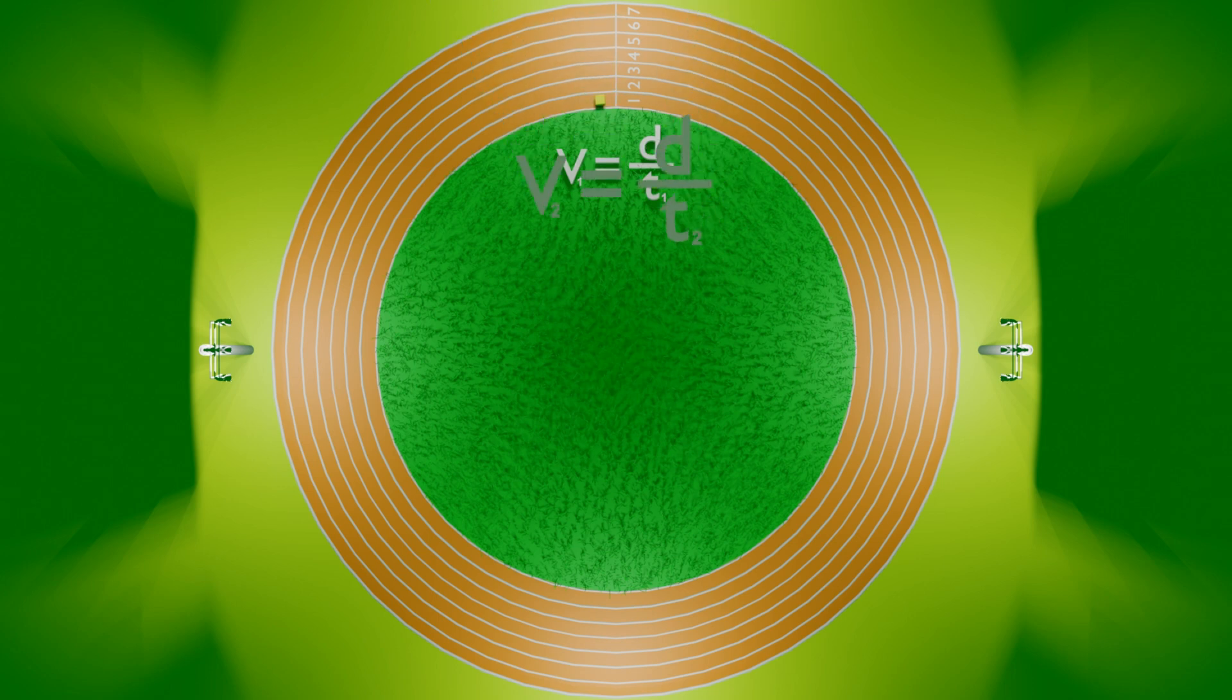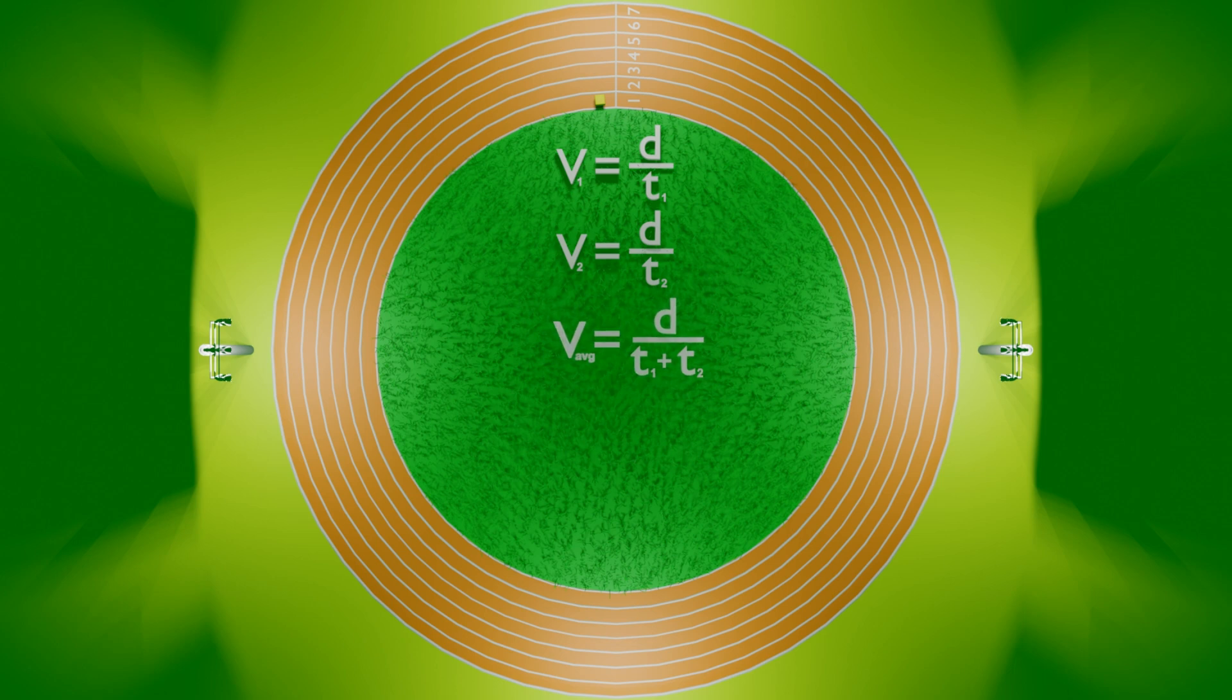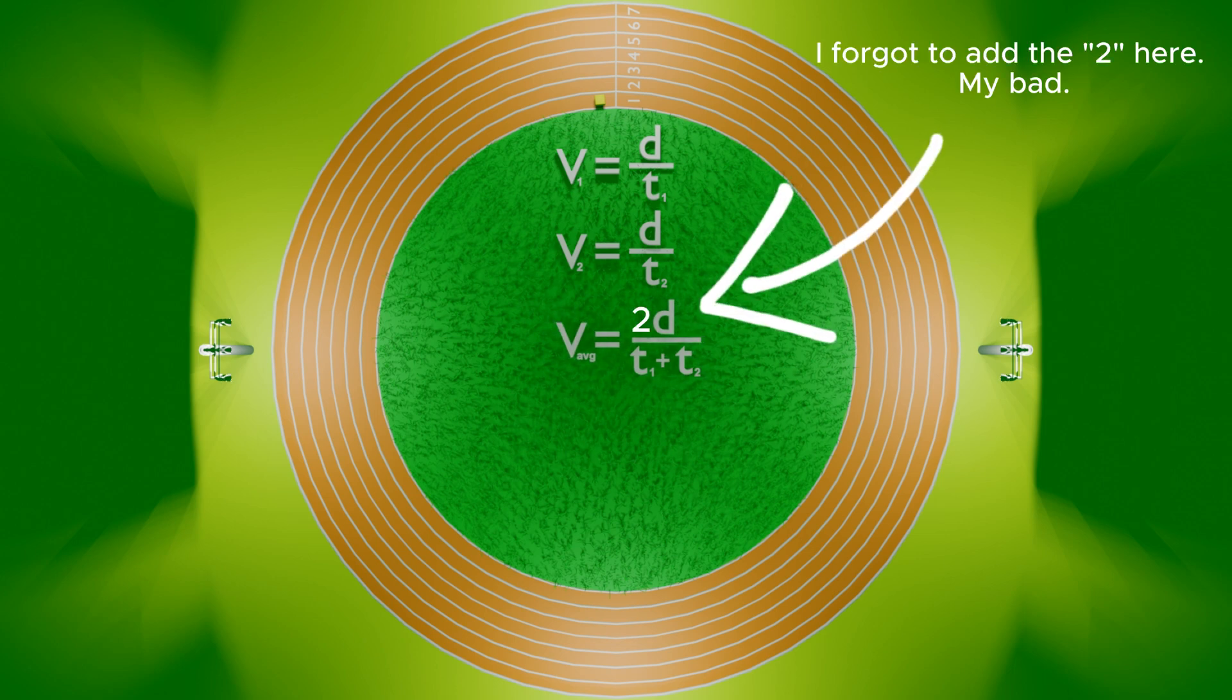The speed of your second lap is equal to the distance around the track divided by T2. Your average speed of the two laps is equal to two times the distance around the track divided by T1 plus T2.